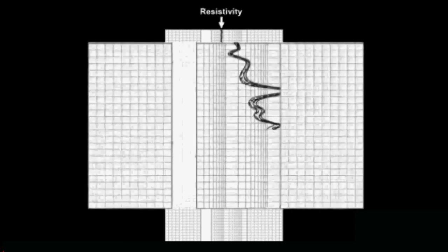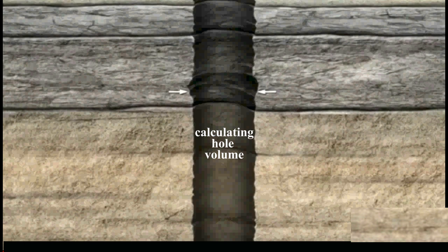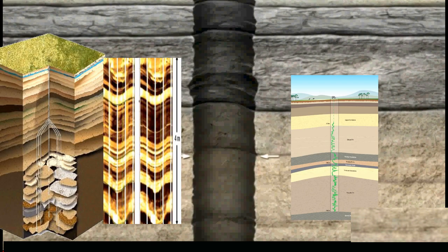The resistivity log helps determine the fluid type. The caliper log, which gives us a shape and diameter over the entire length of the hole, allows us to calculate the volume of the hole, which will be important when we begin the casing run. The caliper log also allows us to identify the type and location of the reservoir rock.